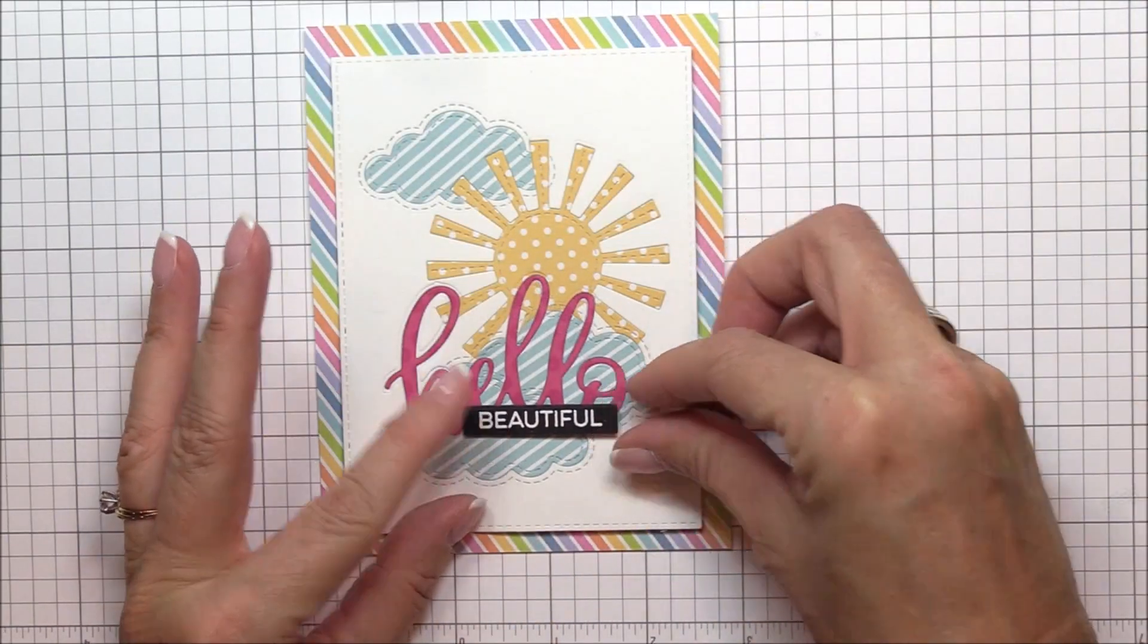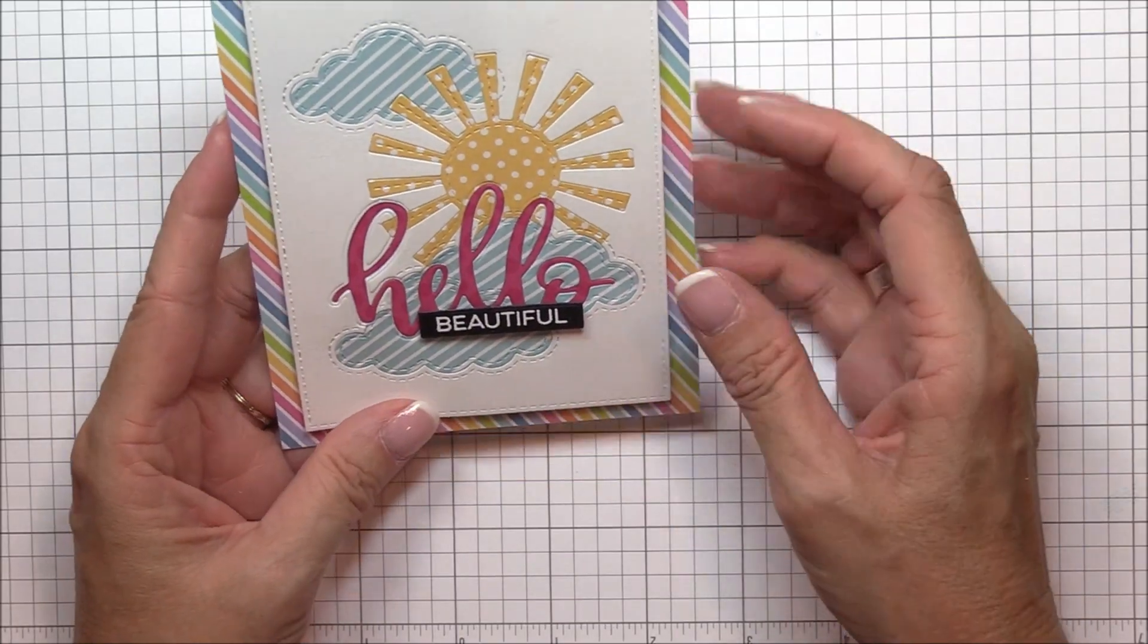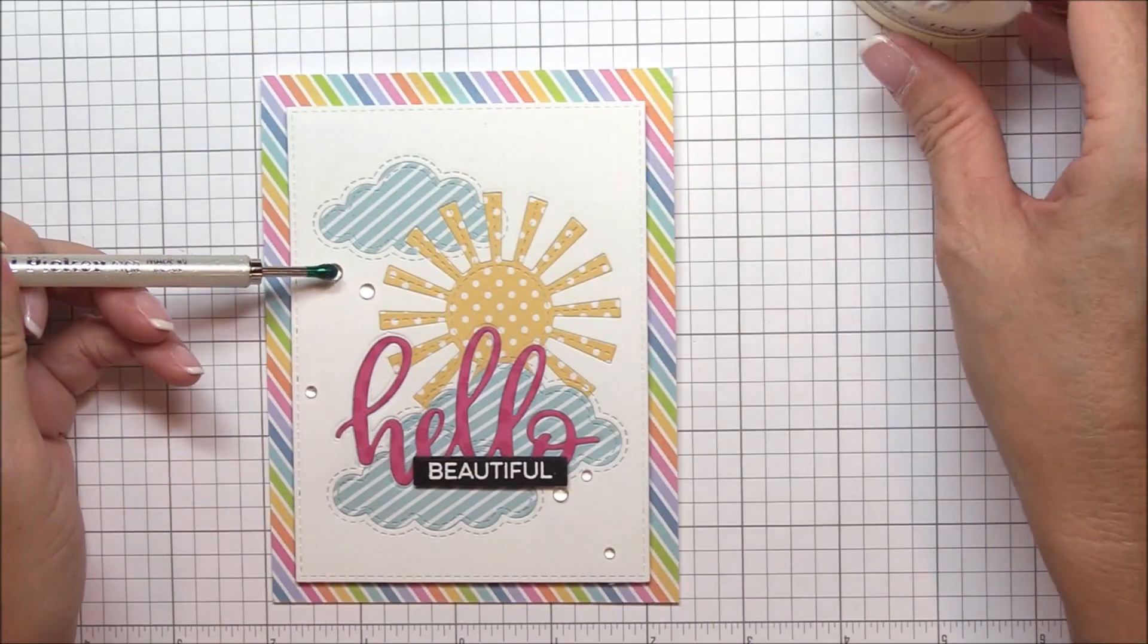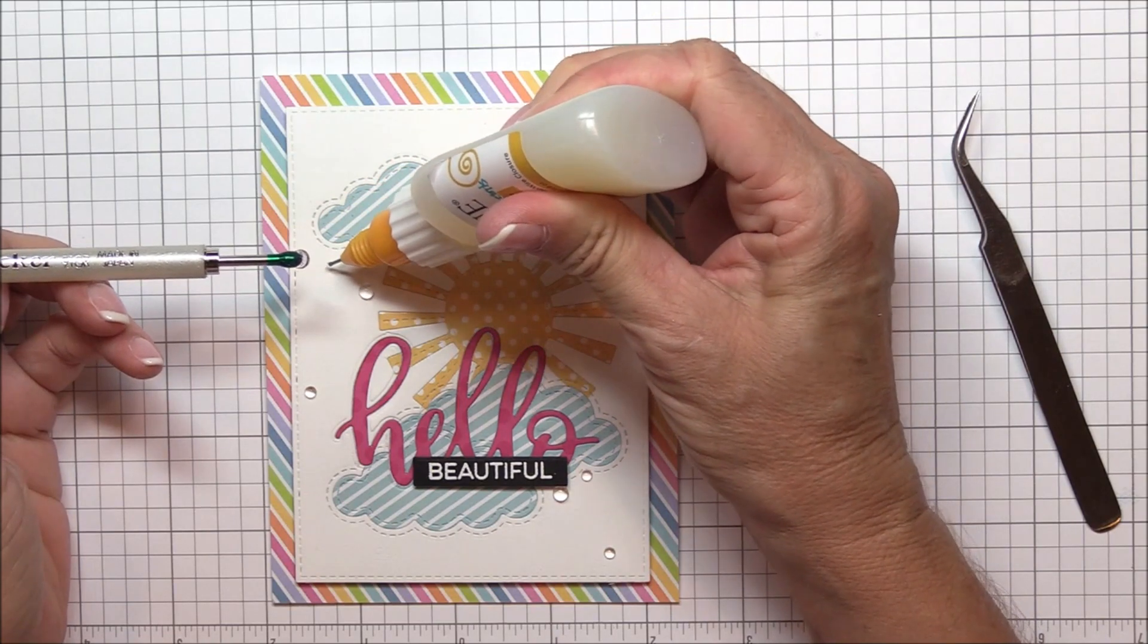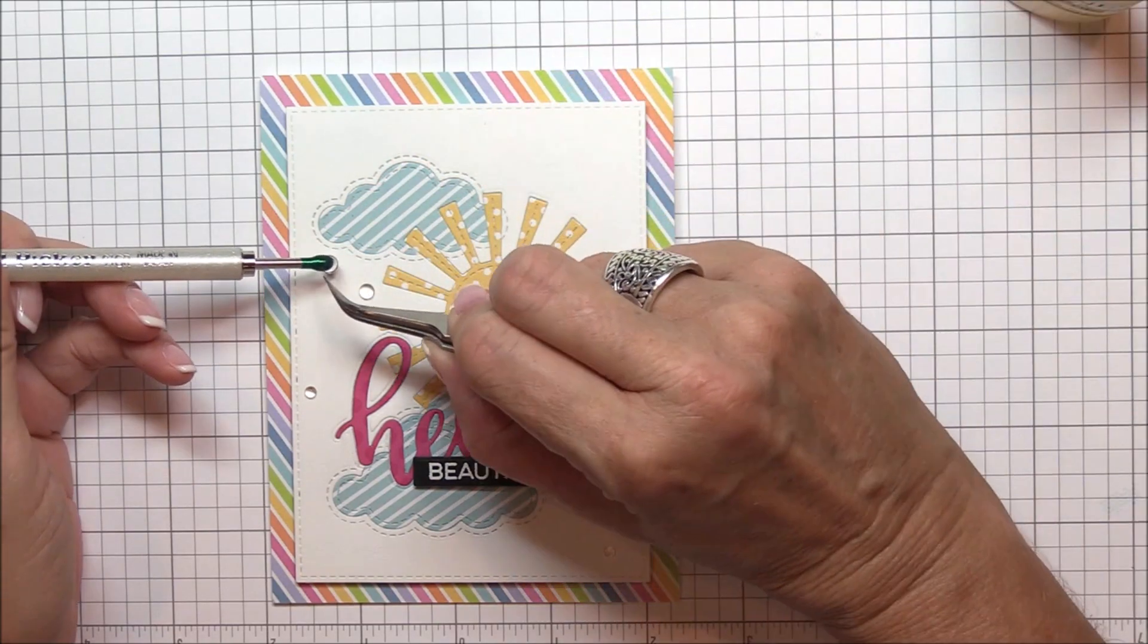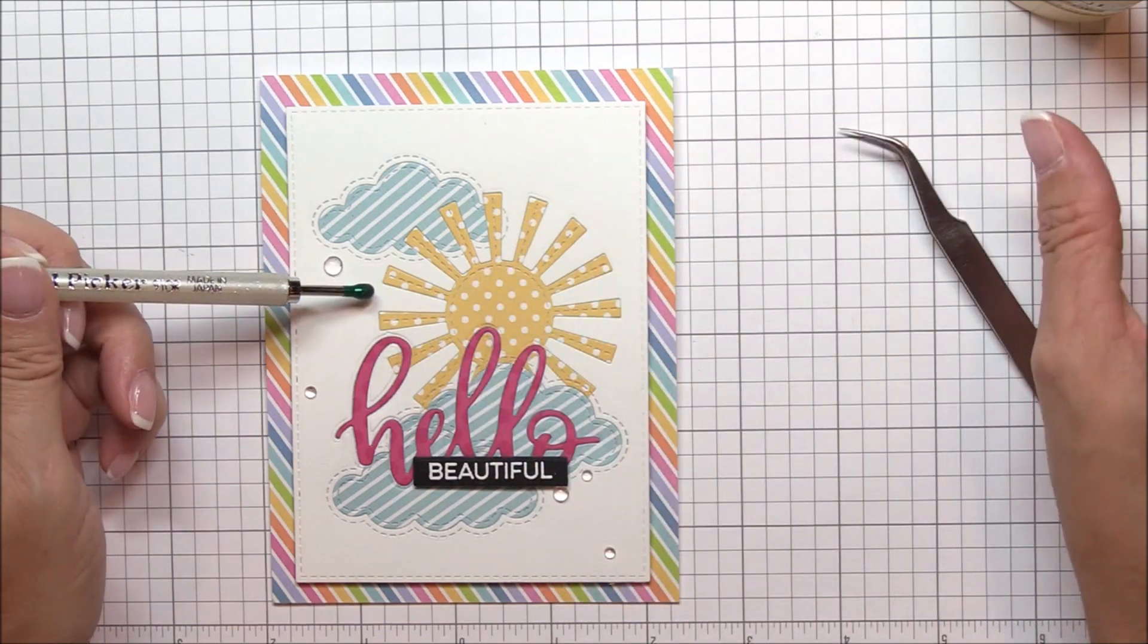I'm adhering the sentiment strip to the image panel just below the word hello. And yes, I'm using foam squares to adhere it. I could have inlaid it to stay true to the concept I'm teaching today, but I just love the pop that foam squares add to a design.